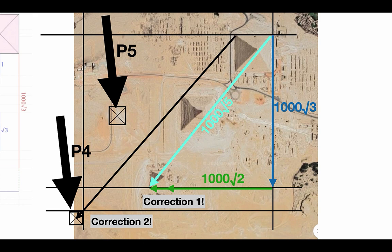Look at this triangle formed by the three Giza giants: a thousand root three, a thousand root two, a thousand root five. And in the distances between them, if you take the distance from Menkaure to Khufu as one, then the distance from Khufu to Khufu is root two by the same scale. And if you take the distance from Khufu to Khufu as one, then from Khufu to Menkaure is root three.